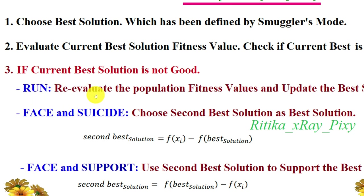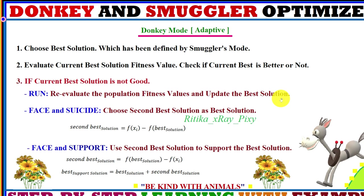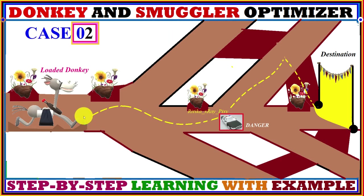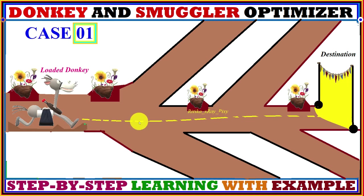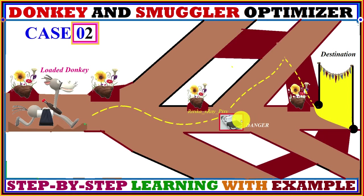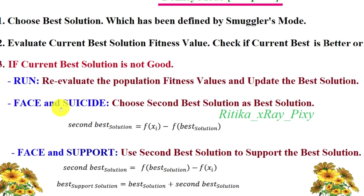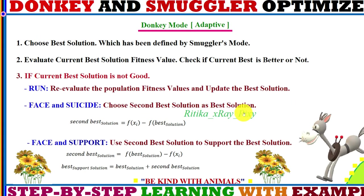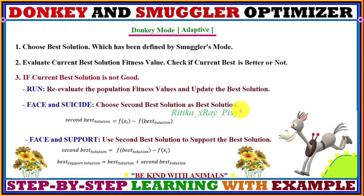In the run action, we evaluate the population fitness values and update the best solution. In face and suicide, we choose the second best solution as the best solution — the first best solution was the route selected by the smuggler, but since there is a hurdle we need another route, so we rearrange the population and select the second best solution until the main route, which is the first solution, is obtained.